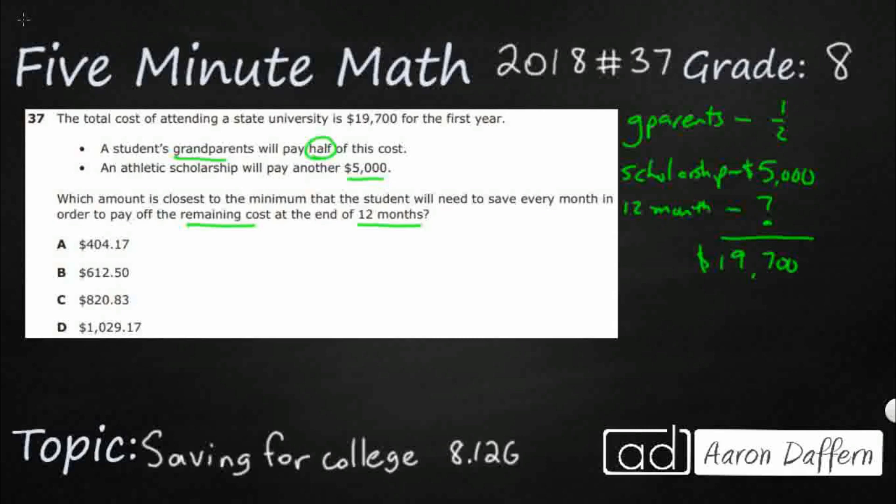So our 12-month is that leftover and all of this together should equal this $19,700. Alright, so now that we know what we are looking at, well the $5,000 is the $5,000. That's pretty standard, but I guess we need to figure out first how much the grandparents are paying.